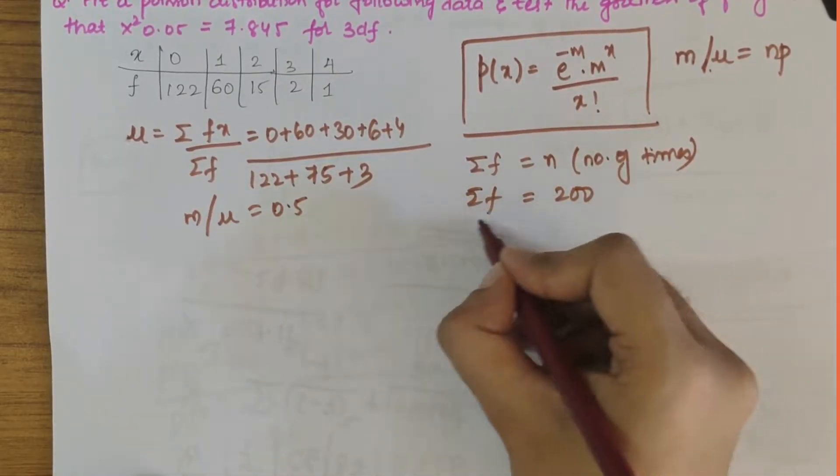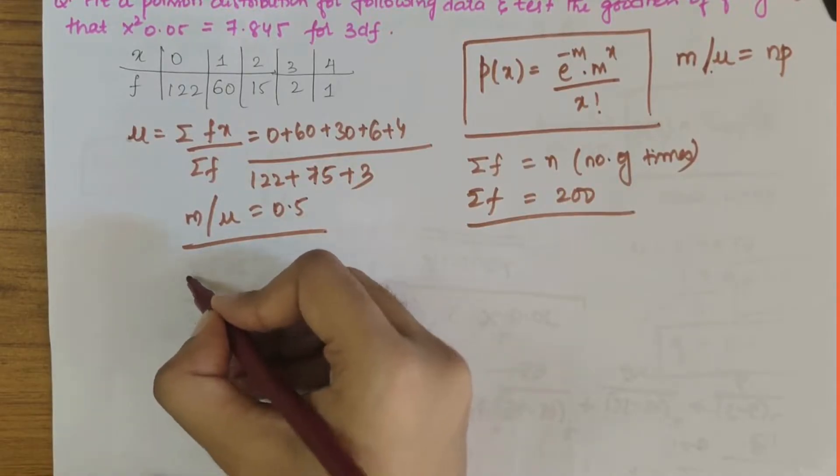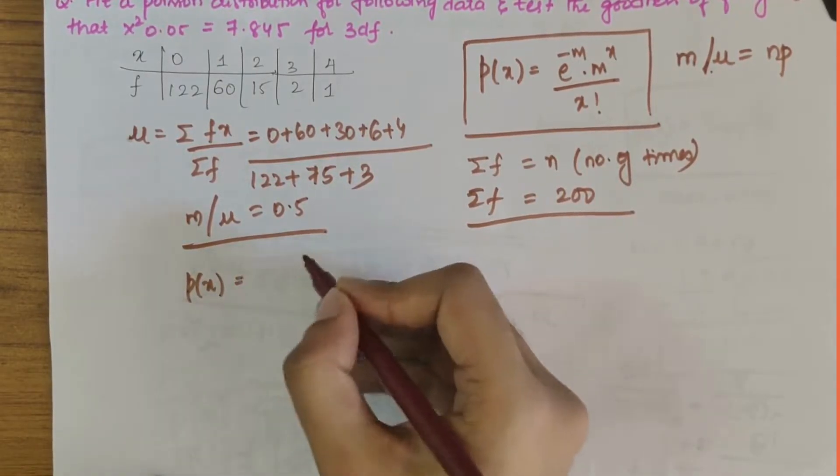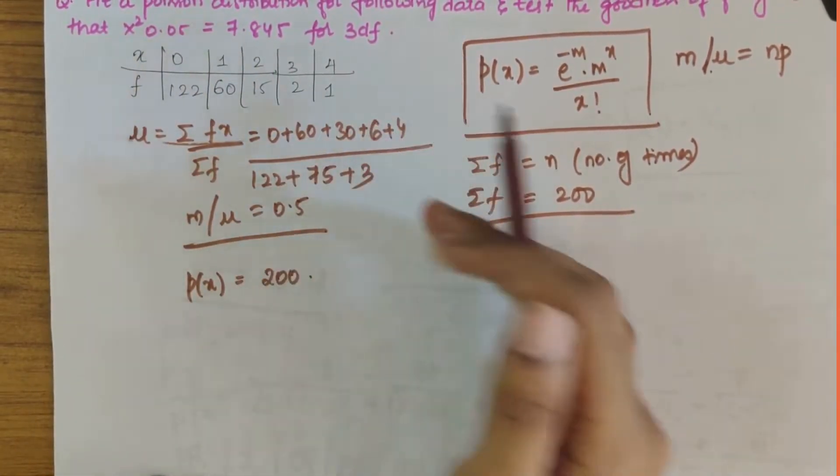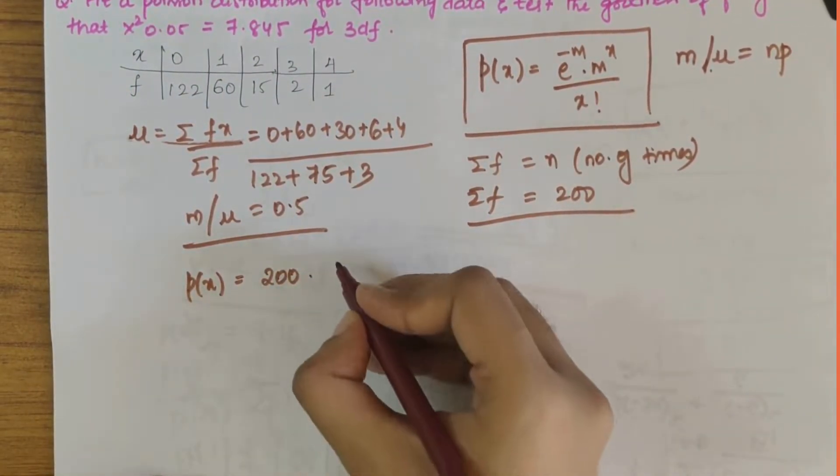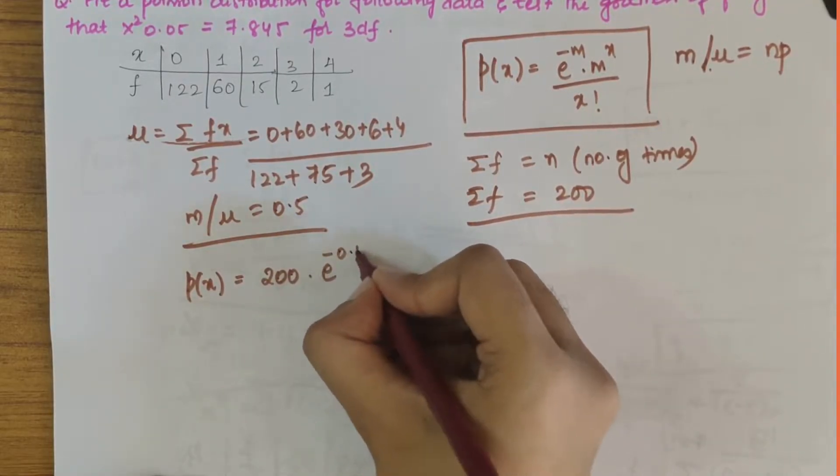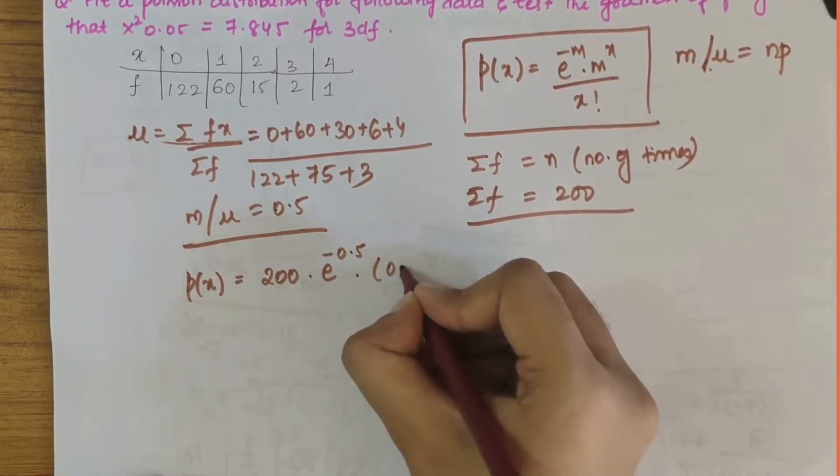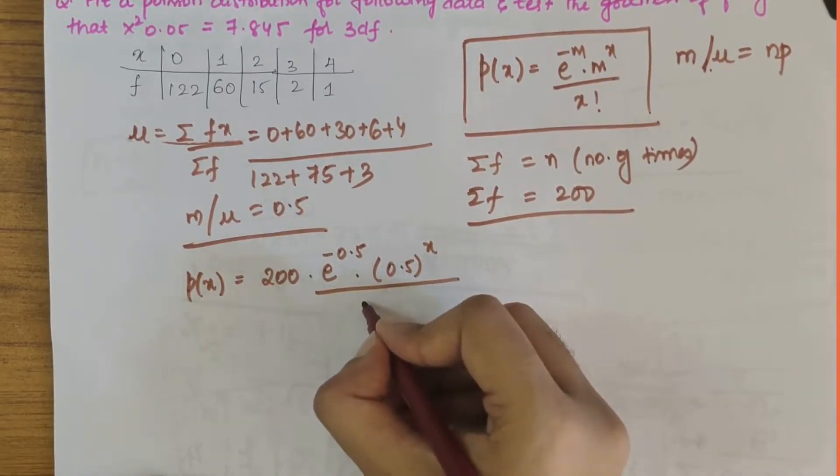Summation f value is also used and the mu value is also considered. Now let's write the formula: p of x equals 200 times e to the power minus 0.5 times 0.5 to the power x divided by x factorial, because 200 times this entire thing is repeated.